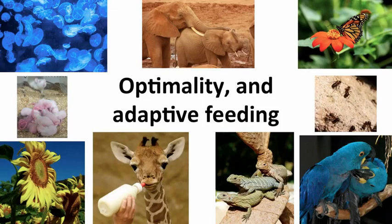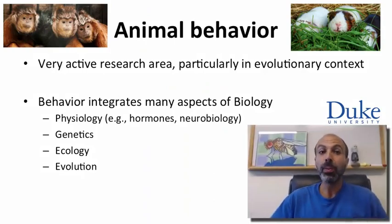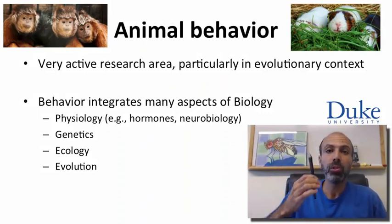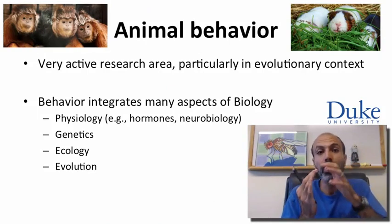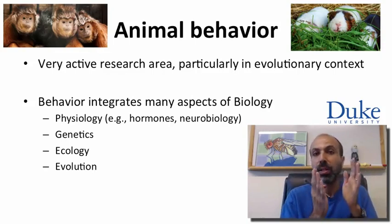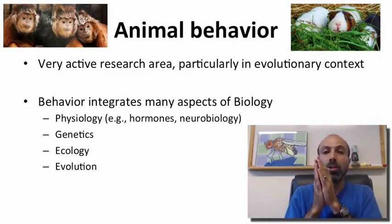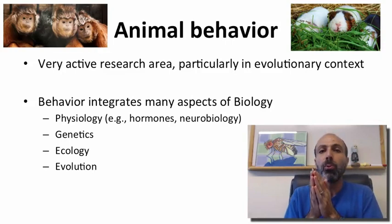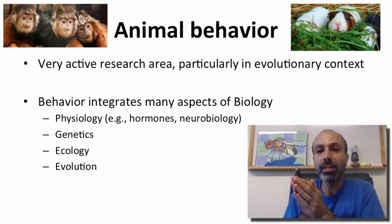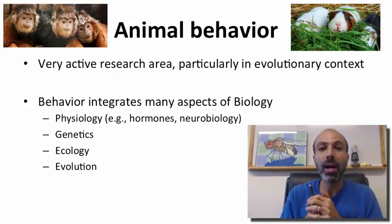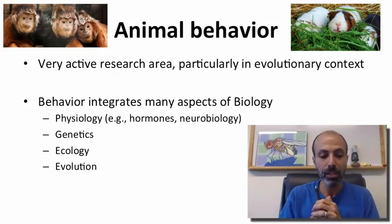But first, let's talk more broadly about animal behavior. Animal behavior is a very active research area, particularly studying it in an evolutionary context. You can study animal behavior from many different approaches — you can look at hormonal or neural bases for animal behavior — but what we want to look at now, rather than proximate causes, is the ultimate reasons for why animals behave the way they do.